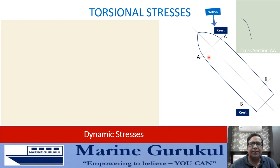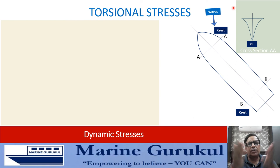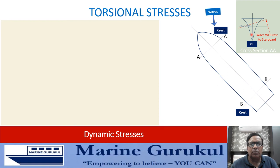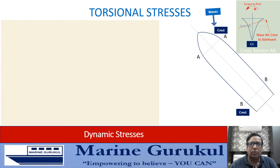Looking at the cross-sectional view at station AA near the bow: with a crest on the starboard bow, the wave waterline shown by the red line has a crest to starboard. This means greater buoyancy on the starboard side of the centerline compared to port, causing a torque to port. So at cross-section AA, the torque is acting to port.